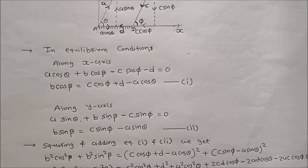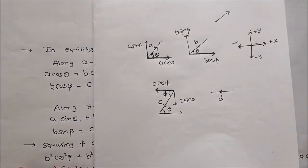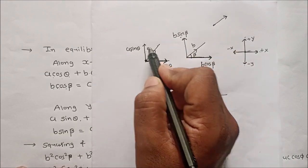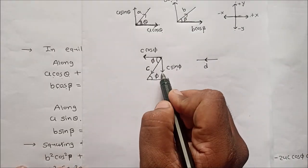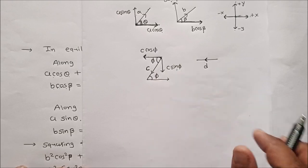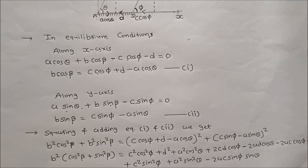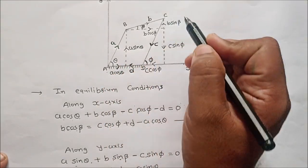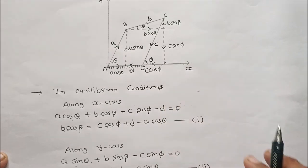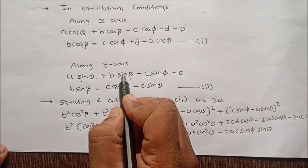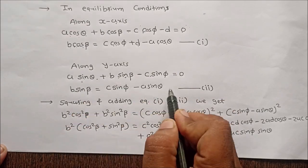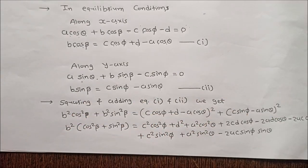Similarly, the sum of components along the y-axis must equal zero. A sin theta and B sin beta are along the positive y-direction, and C sin phi is in the negative y-direction. So: A sin theta + B sin beta − C sin phi = 0, giving B sin beta = C sin phi − A sin theta. This is equation number 2.